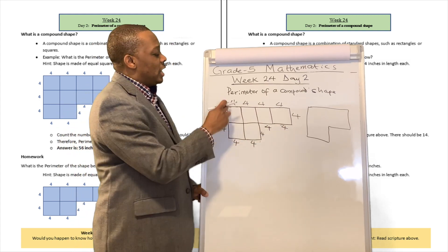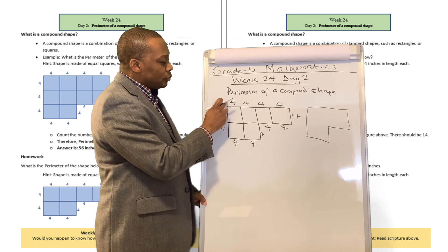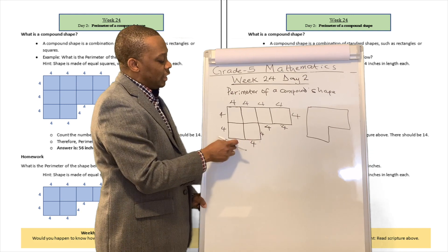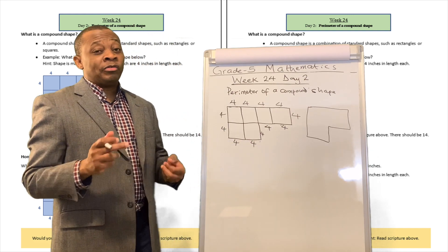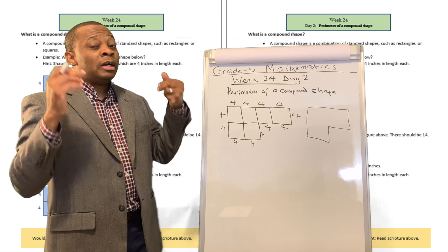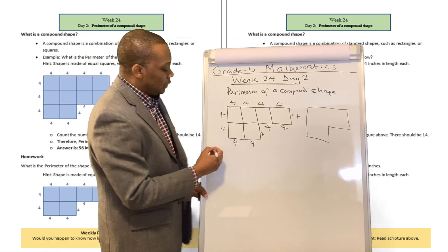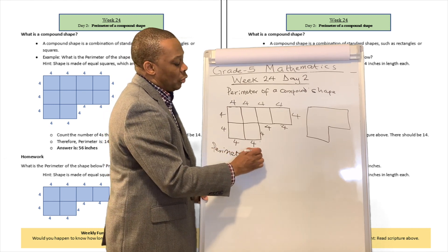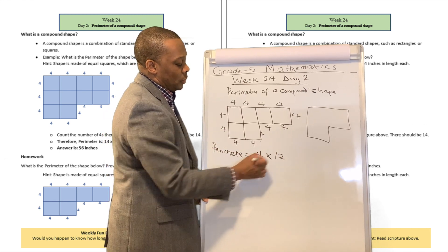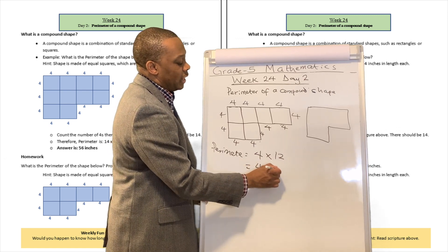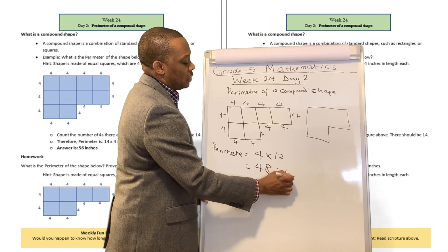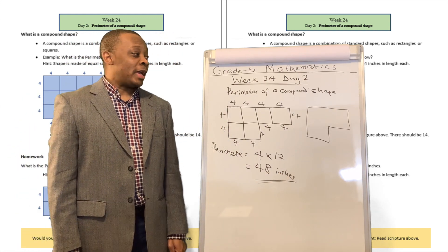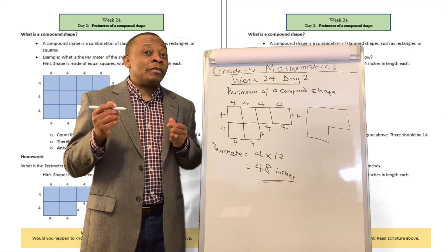All you need to do is to count the number of fours. 1, 2, 3, 4, 5, 6, 7, 8, 9, 10, 11, 12. So each of the sides is four inches long, and there are 12 equal sides. So the perimeter will be simply 4 multiplied by 12, which is going to be equivalent to 48 inches. Alright. Assuming that these are inches over there. Alright. So that's just a simple way to calculate perimeters of compound shapes.